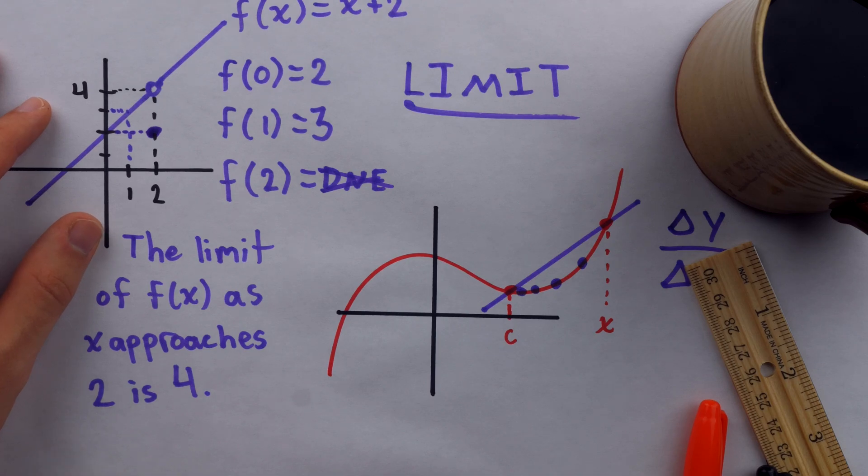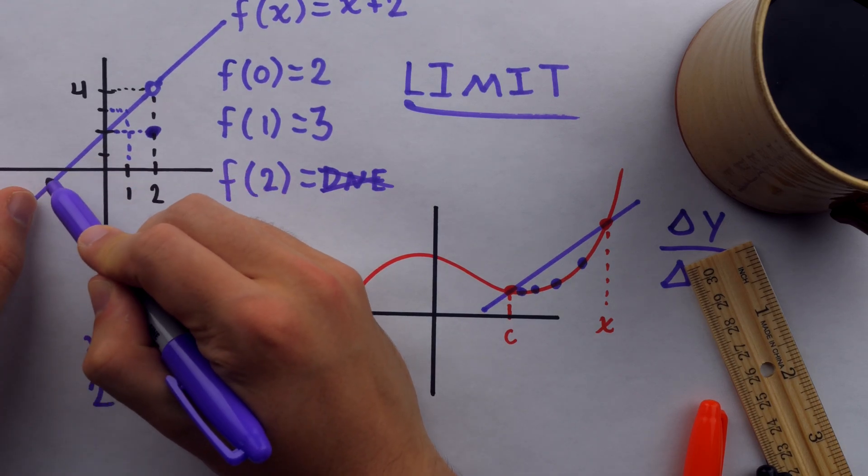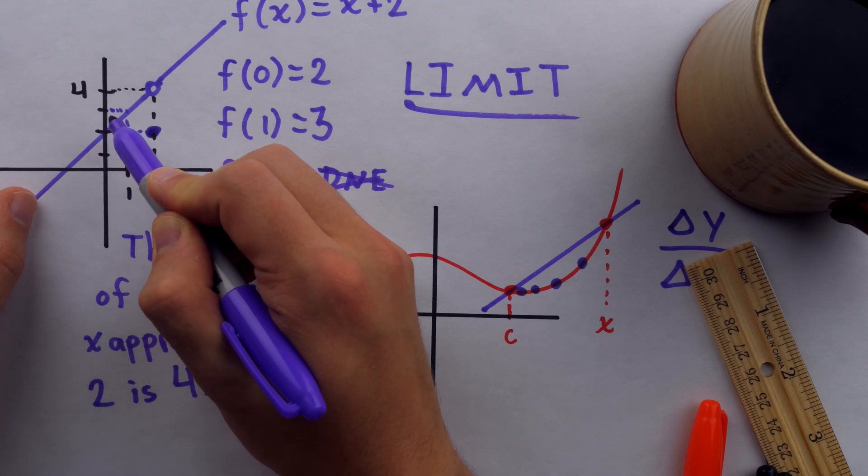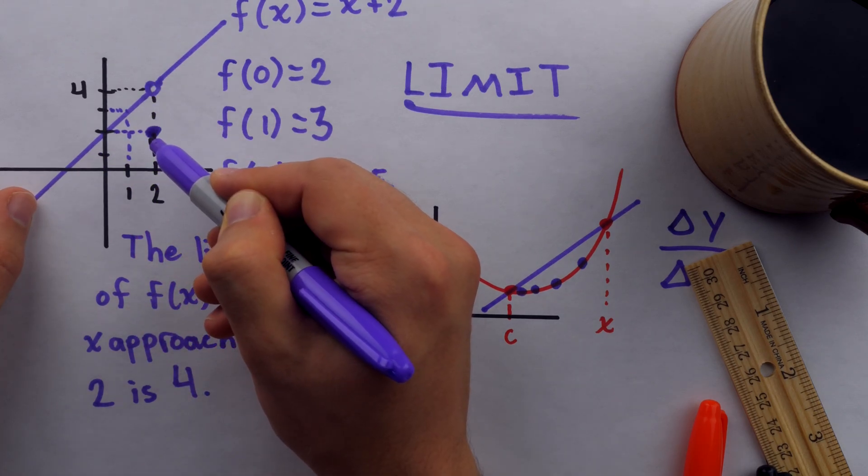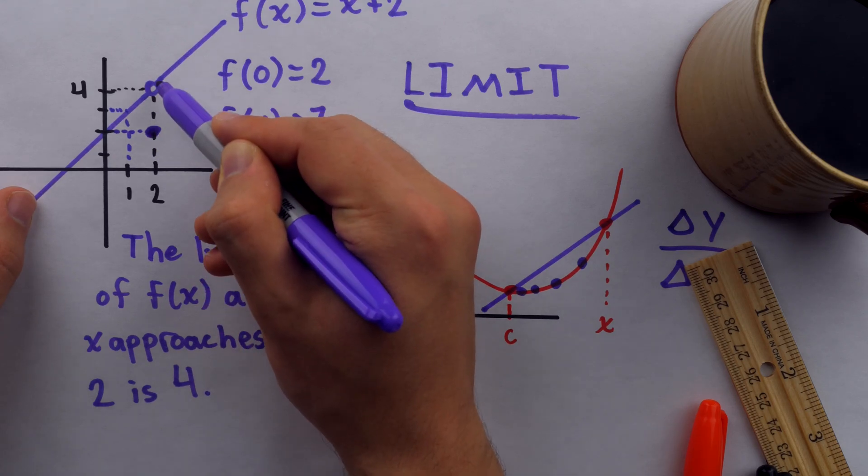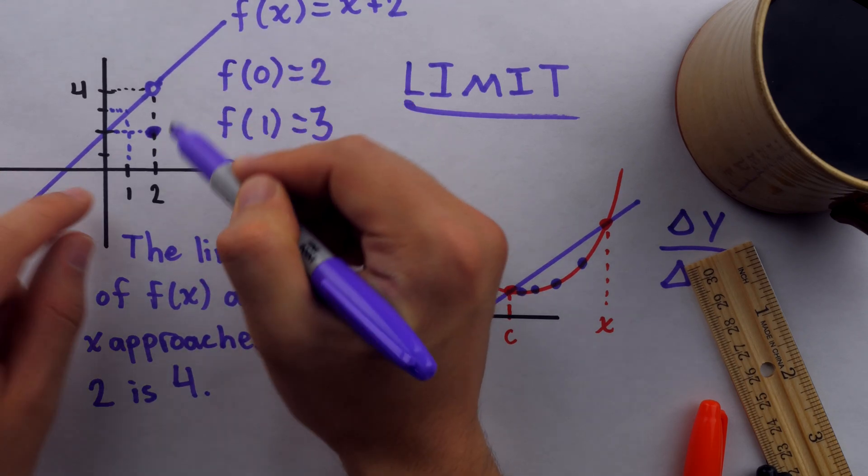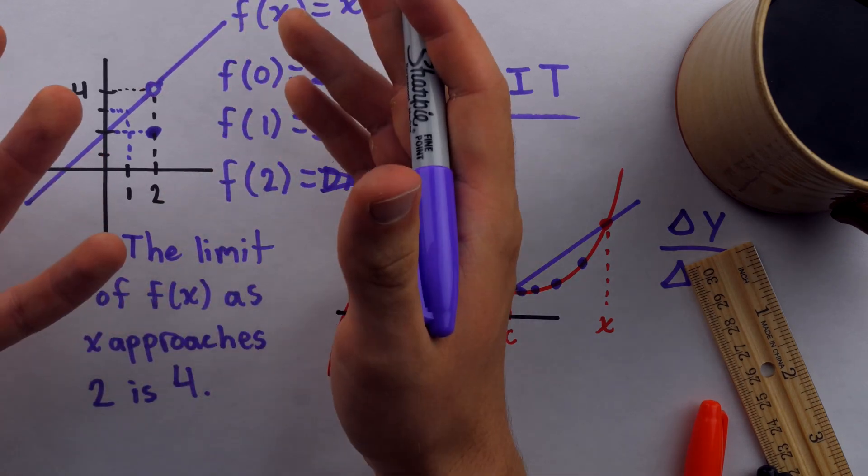When x equals 2, the function equals 2. So it's just an ordinary line, a plain old line, right until you get to x equals 2, where there's this hole and it jumps down for a second, and then it's right back to being a normal line. It's only at x equals 2 where it exhibits this strange behavior.